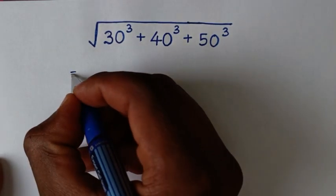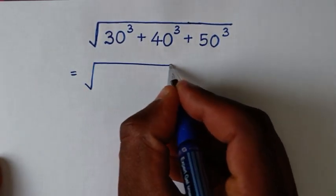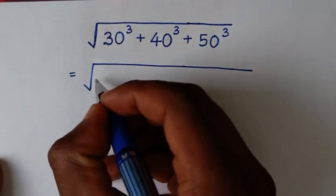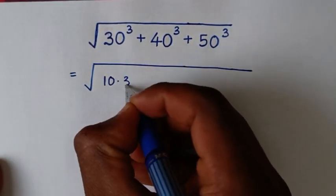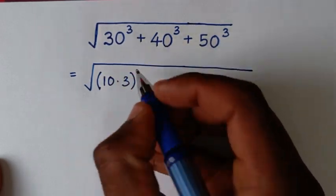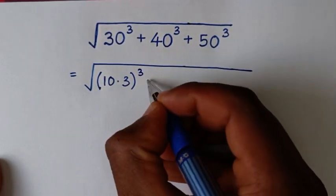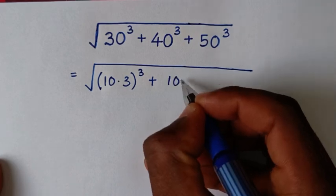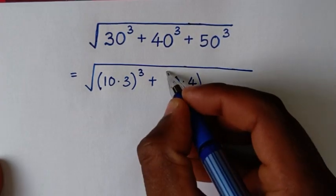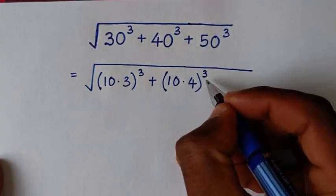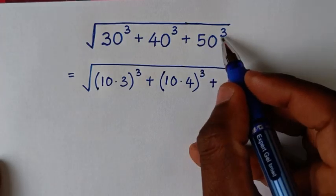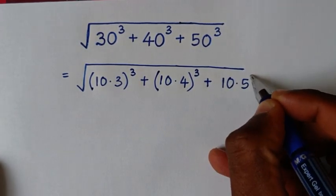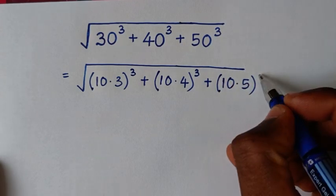So it will be equal to the square root of 30³. Now, 30 is the same as 10 times 3, then bracket to the power of 3, plus 40³, where 40 is the same as 10 times 4, bracket to the power of 3, plus 50³, where 50 is the same as 10 times 5, bracket to the power of 3.